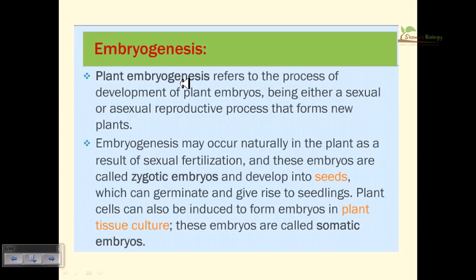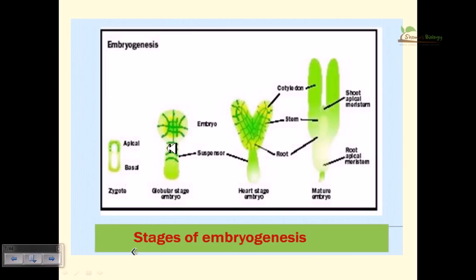Plant embryogenesis refers to the development of plant embryos from the zygote — this is zygotic embryogenesis. If development of embryo occurs from somatic cells, it is somatic embryogenesis. Embryogenesis may occur naturally through sexual fertilization, producing zygotic embryos that develop into seeds and seedlings. Plant cells can also be induced to form embryos and mature plants using plant tissue culture.